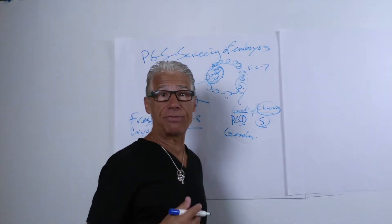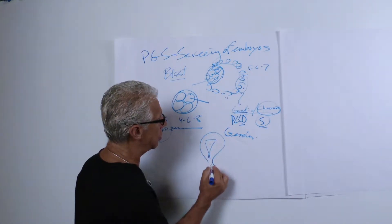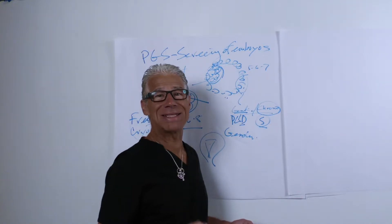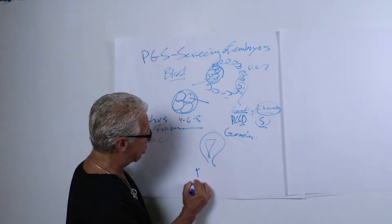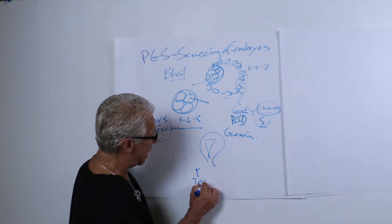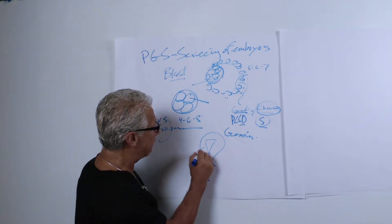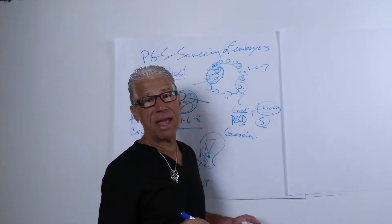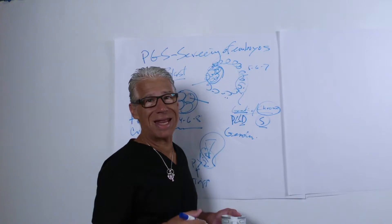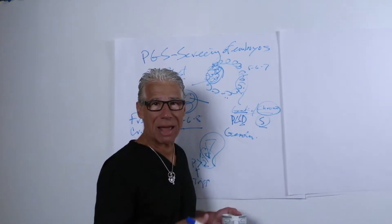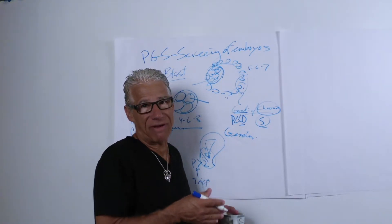And the biggest benefit of freezing is that the endometrial receptivity or the lining of the uterus may be adversely affected by the stimulation. And quite often by the time a woman has an egg retrieval or a trigger shot, the day of trigger, the progesterone is often greater than 1.5 to 2, and if it's greater, it may abnormally stimulate the uterine lining or set it to a stage that it doesn't make it as receptive as when the progesterone is less than 1.5.